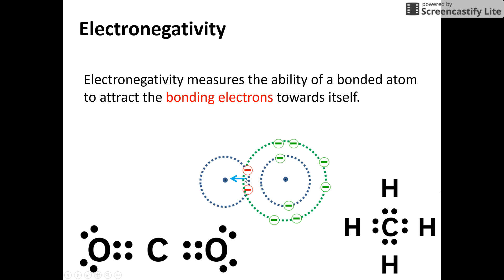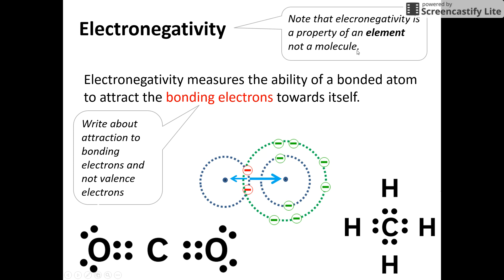So in this case of hydrogen fluoride, it's how strongly does hydrogen attract those bonding electrons compared to fluorine. Notice we're talking about bonding electrons and not valence electrons. And notice that we're also talking about electronegativity as a property of an element. So I'm not saying the electronegativity of HF. I'm talking about the electronegativity of hydrogen attracting those electrons and fluorine attracting those electrons.